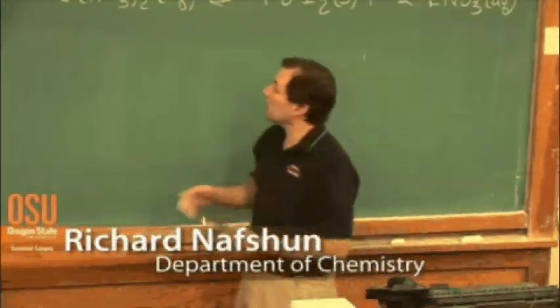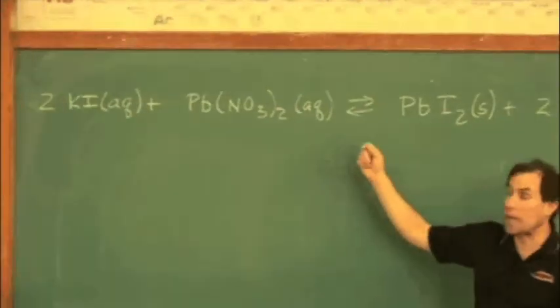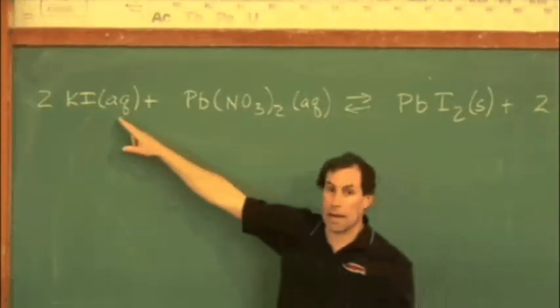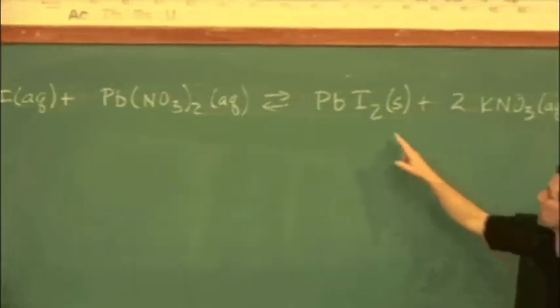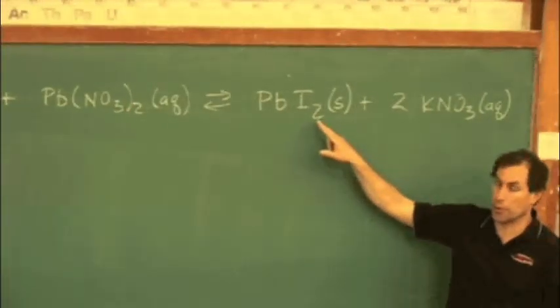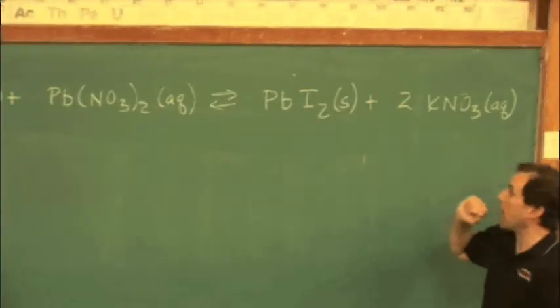A precipitation reaction takes place when we take two solutions. We have aqueous solutions, meaning in water, some potassium iodide and some lead nitrate. We're going to form a solid, and that solid is going to have a nice little color to it. You'll be able to see it clearly in the demonstration in a moment. That solid is going to be lead iodide.